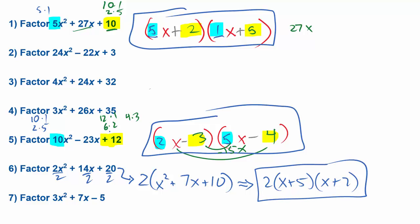So you still need to look for a GCF on these examples. If you see one, take it out. Like number 3, you would have to take a GCF out of here. And then if you can factor the inside more, do it.